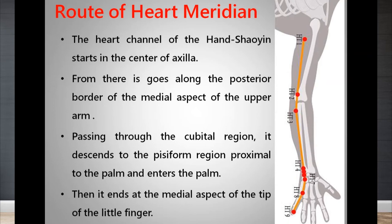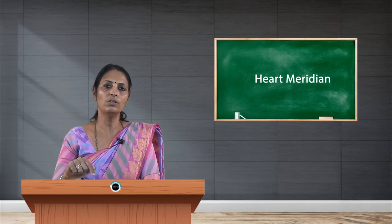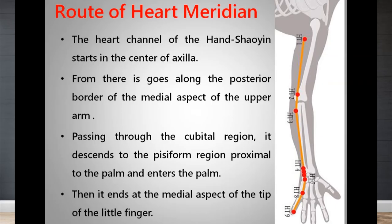Coming to the pathway, it starts from the heart and divides into three branches: one is the inner ascending branch, another is the inner descending branch, and the third is the superficial branch. The inner ascending branch ascends upward from the heart to the chest, eye, and brain. The inner descending branch descends from the heart to the small intestine to communicate with its luo-connecting meridian.